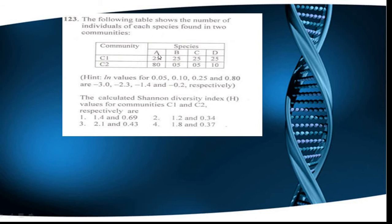The species richness of both communities C1 and C2 is the same, because both contain 4 different species: A, B, C, and D. Species richness is a measure of the total number of different species present in a community, so the species richness for both communities is equal.